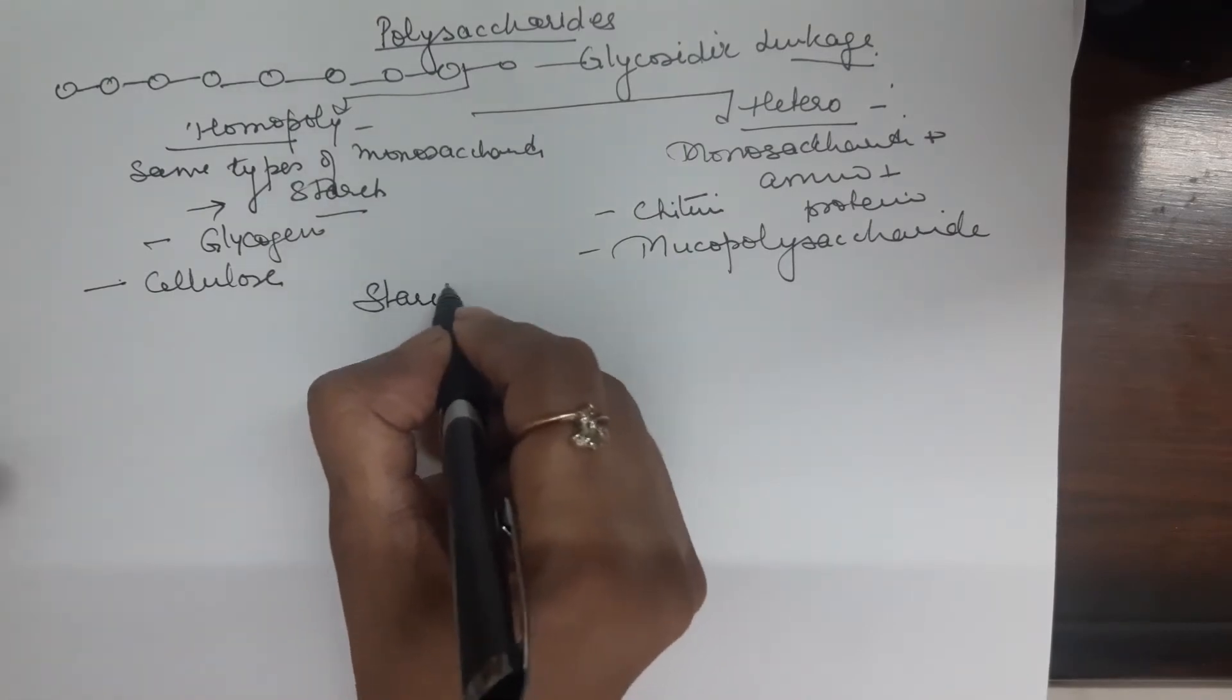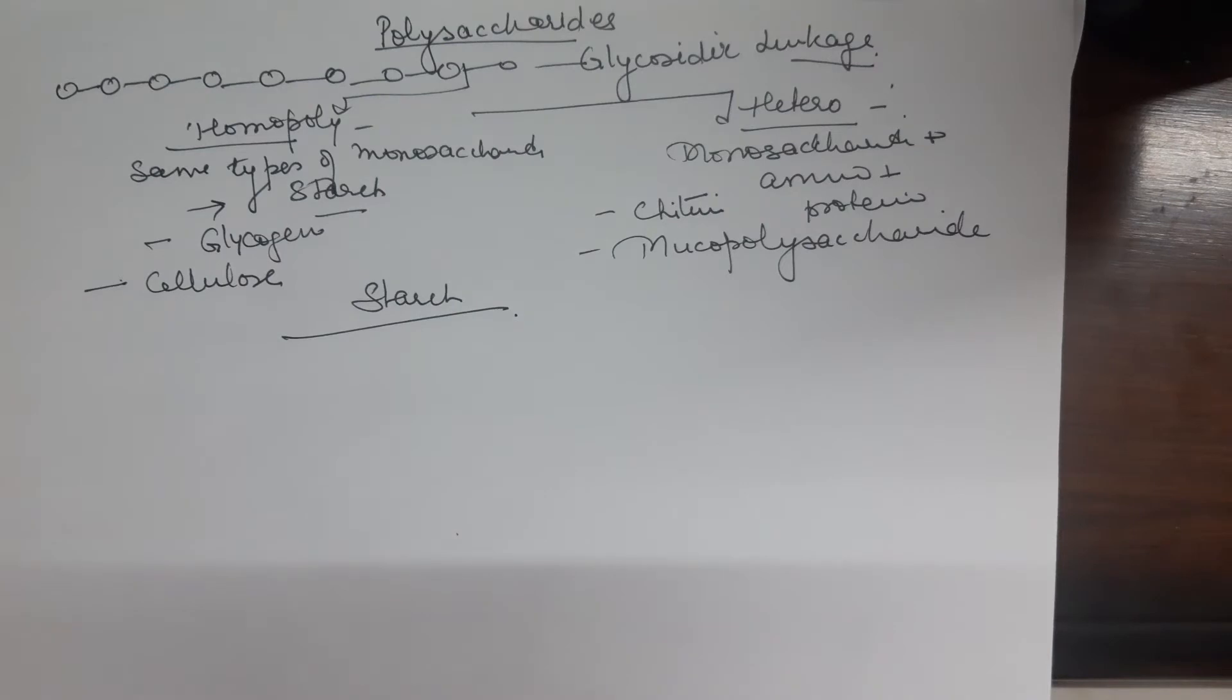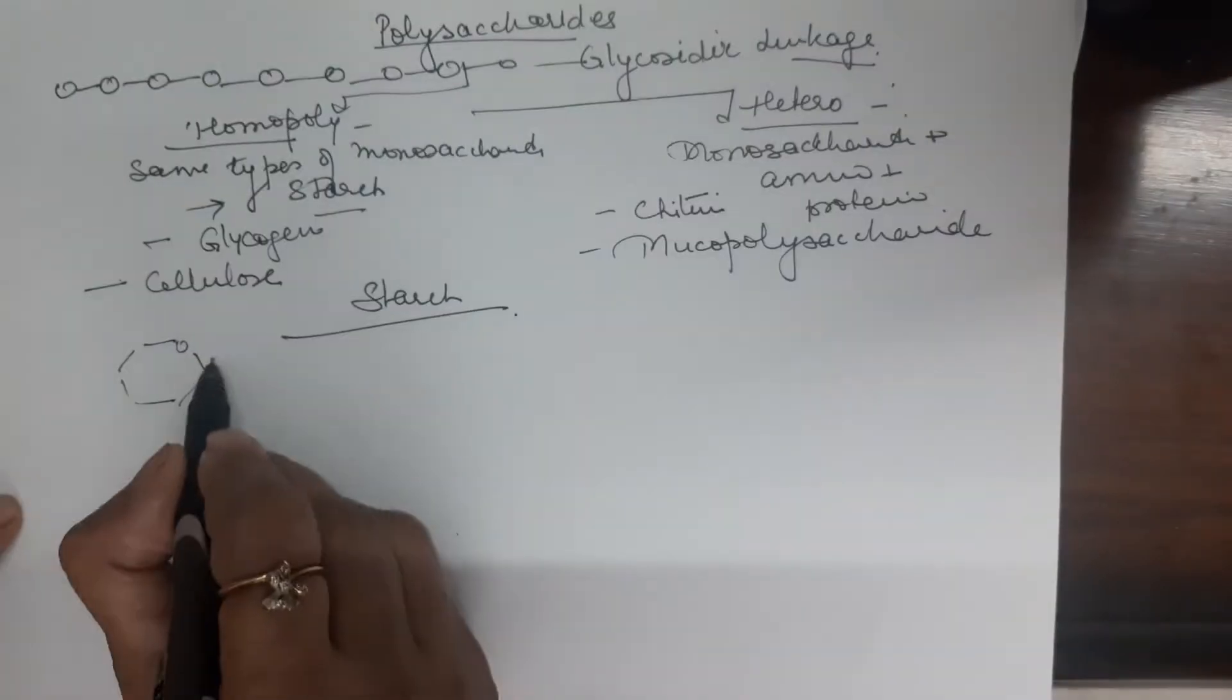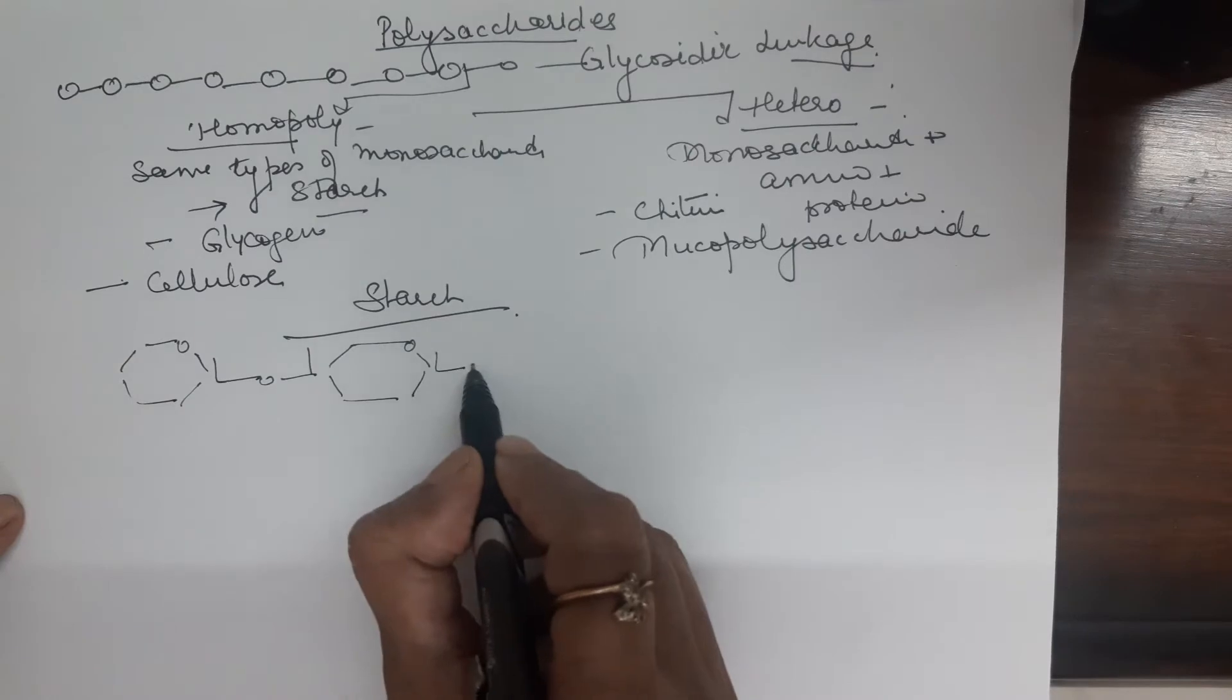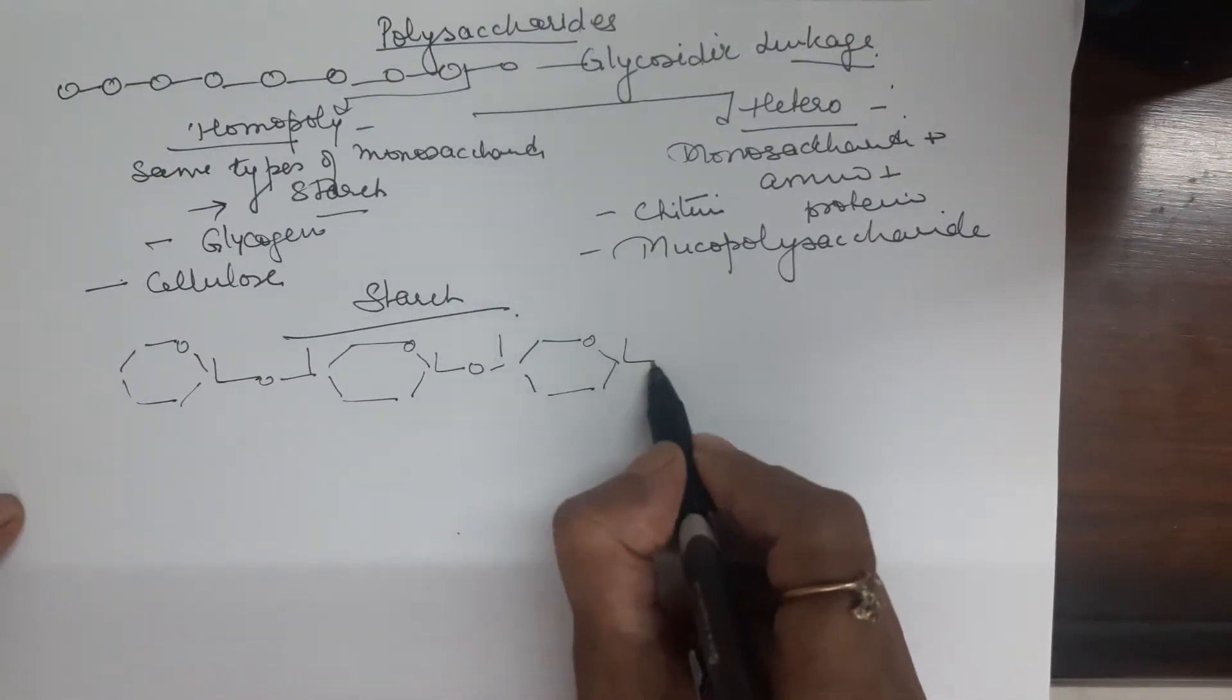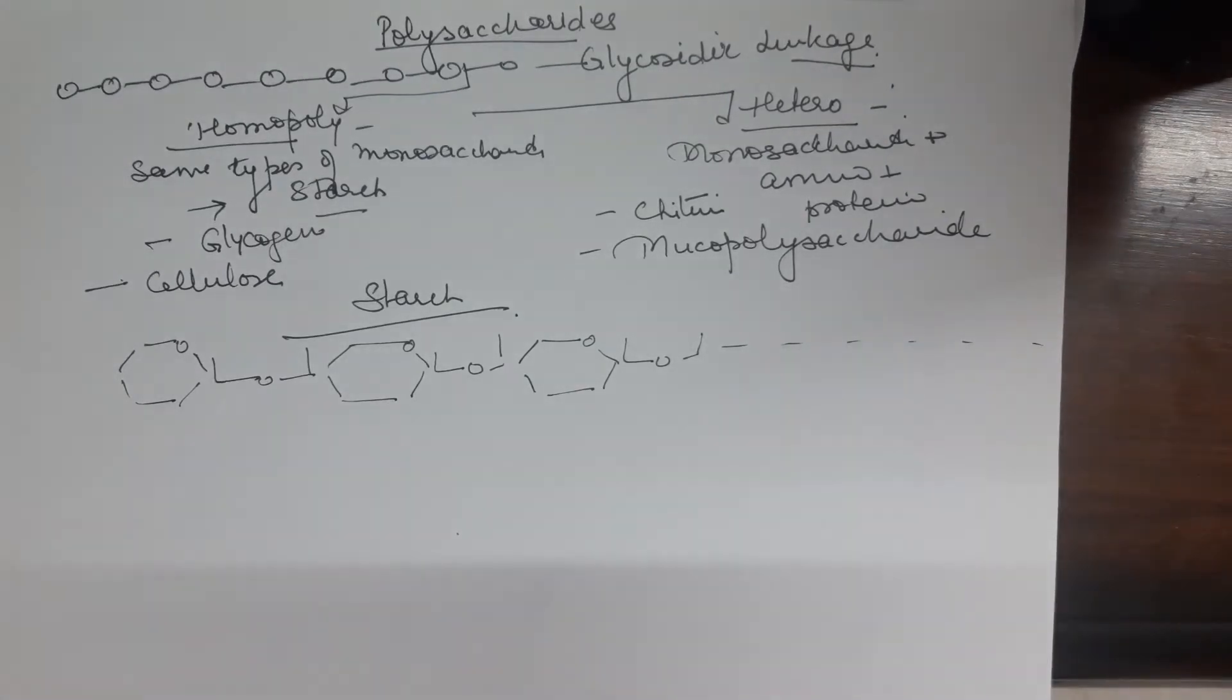Starch. As we all know that starch is the stored form of food in plants. A large number of glucose molecules combine by 1,4-alpha-glycosidic linkage to form starch. So, we can extend this chain and this gives us the structure of starch.